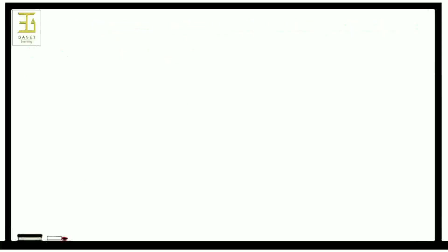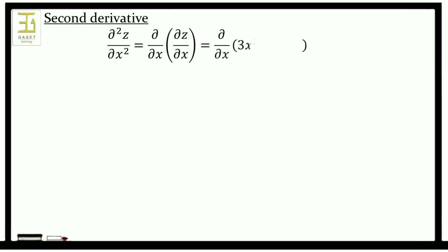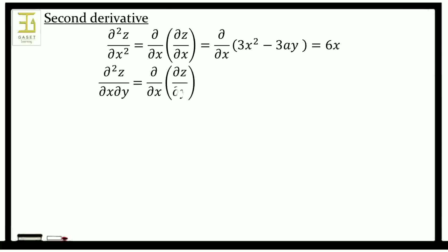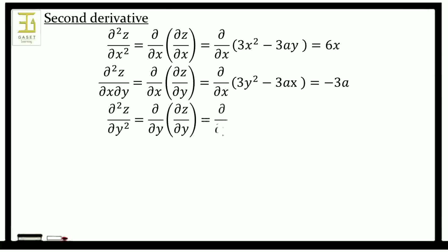Then we find the second derivatives. Dou squared z by dou x squared equals dou by dou x of dou z by dou x; applying the value of dou z by dou x we get 6x. Next, dou squared z by dou x dou y equals dou by dou x of dou z by dou y; substituting we get minus 3a. The third one, dou squared z by dou y squared equals dou by dou y of dou z by dou y, which equals dou by dou y of 3y squared minus 3ax, giving 6y.